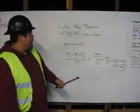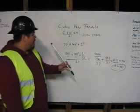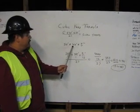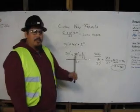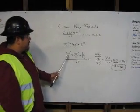One example could be if we're pouring a slab the length would be 20 feet by 40 feet wide by 5 inches deep. To figure out how much cubic yards we need, we need to plug these numbers into the cubic yard formula.